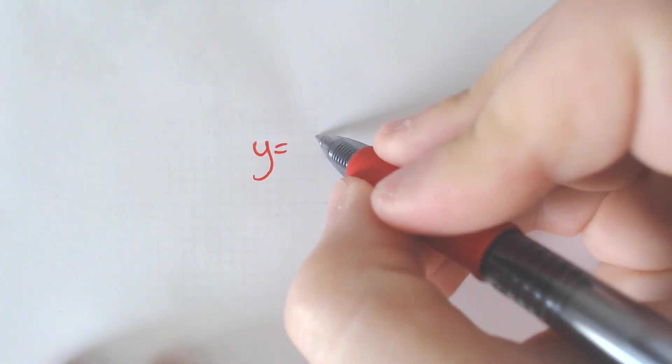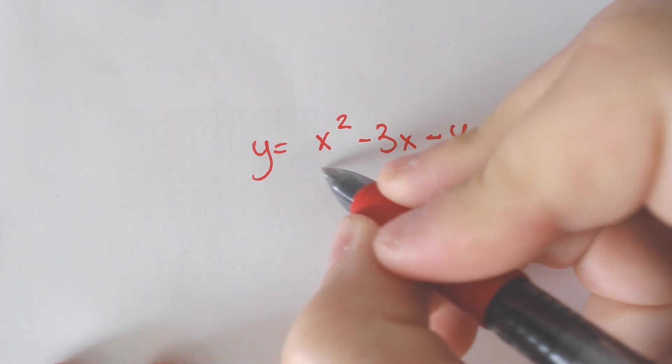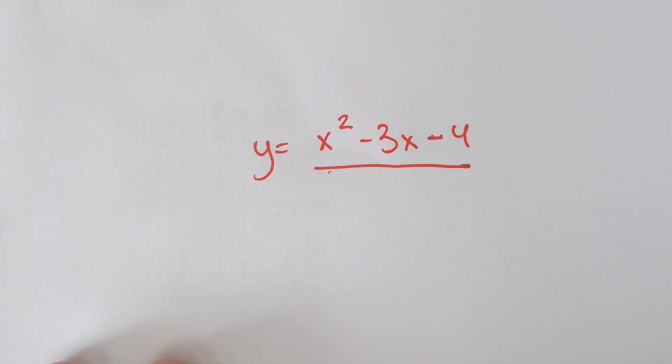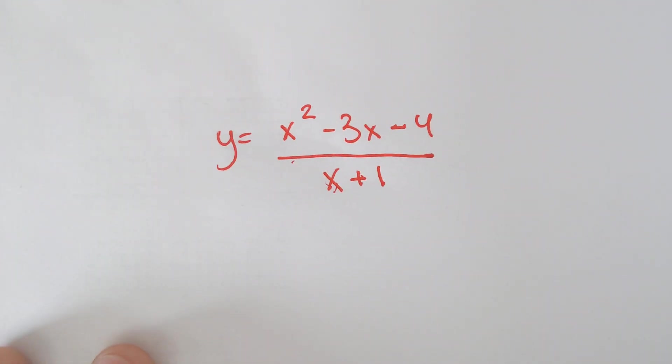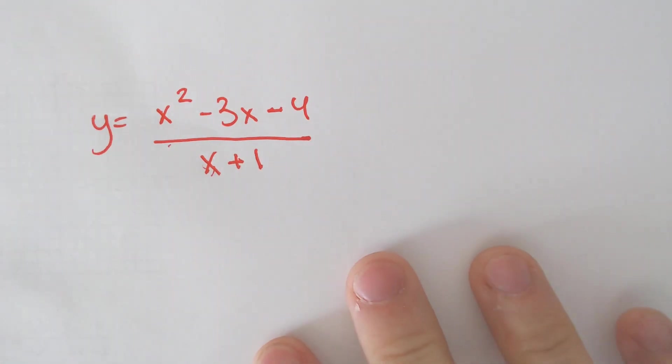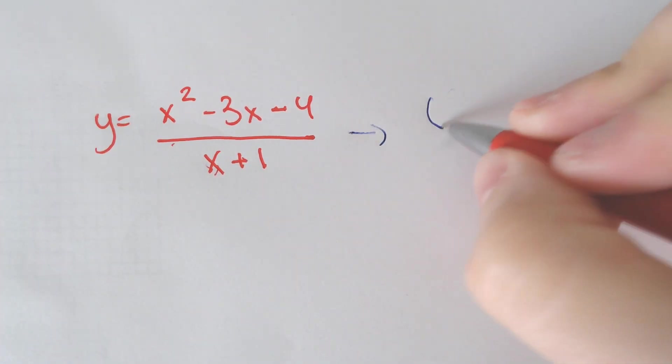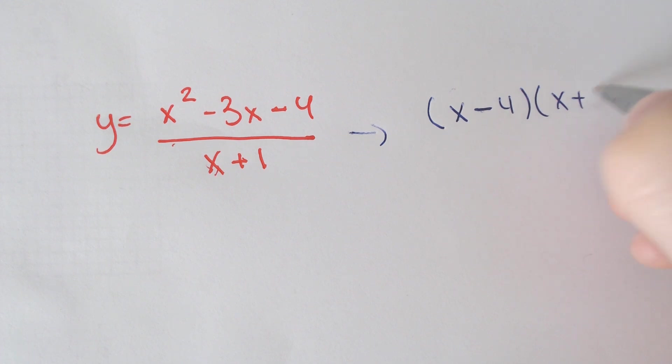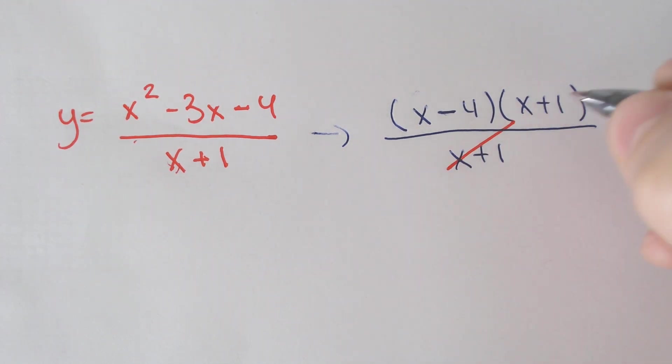So let's say we had something like this. Let's say we got y equals x squared minus 3x minus 4 divided by x plus 1. Okay, if I wanted to graph this, same thing is true where I need to factor the top of the expression. It would be x minus 4 and x plus 1 over x plus 1, and lo and behold the x plus 1s cancel.